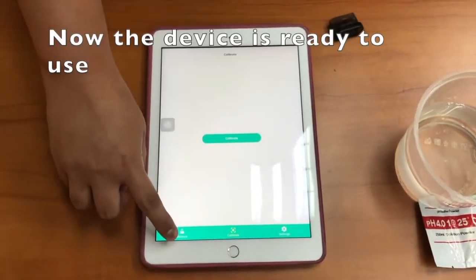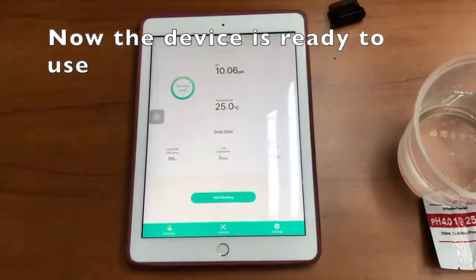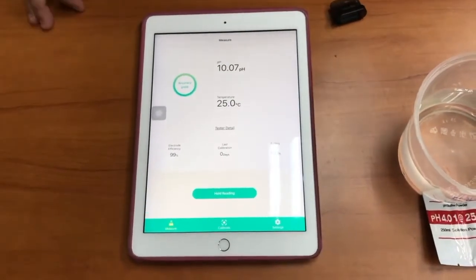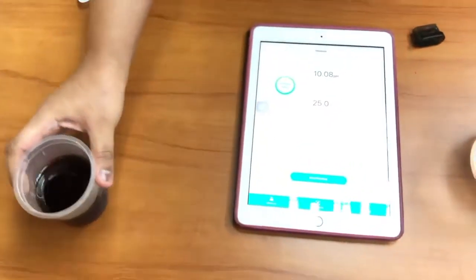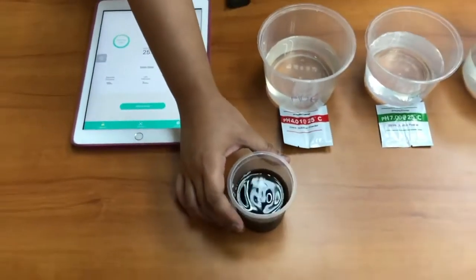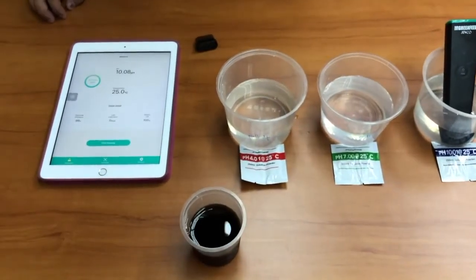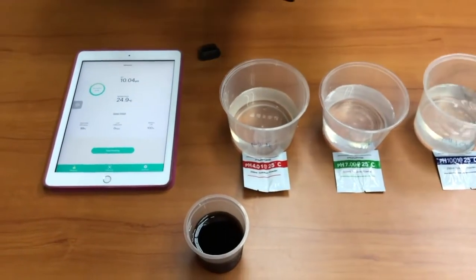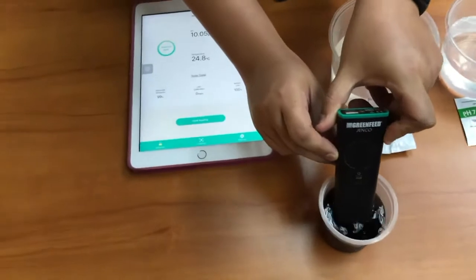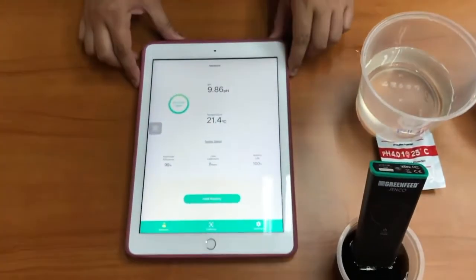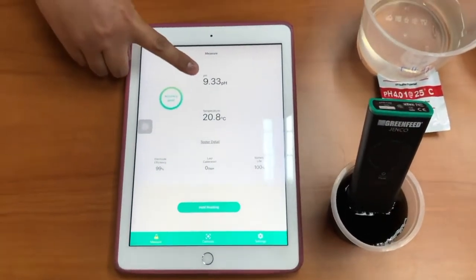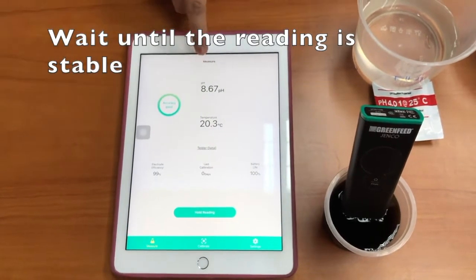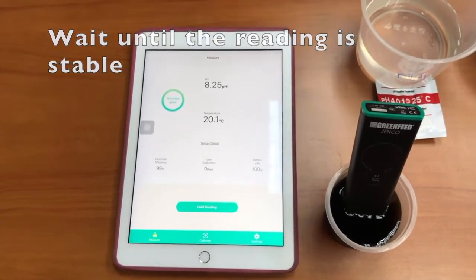Now we can start to measure our solution. This is an unknown solution, and we're going to check what the pH value of this solution is. I'm going to take our pH meter and put it inside here to see what the pH is. You can check the pH value here—it will stabilize at this place. Now let's see.